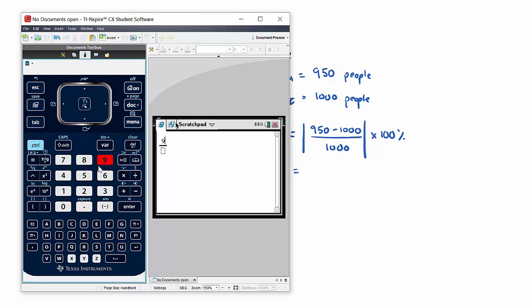So let's just quickly find: 950 subtract 1000, all divided by 1000. So that's minus—I'll get it as a decimal—minus 0.05.